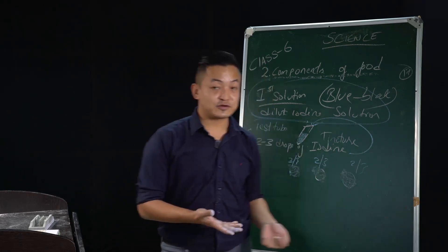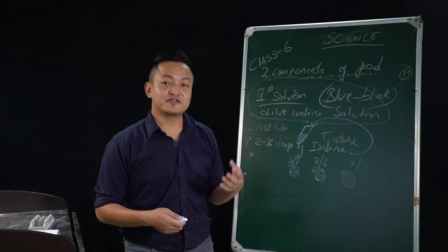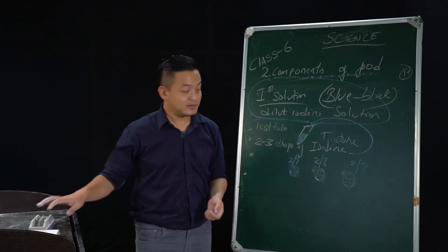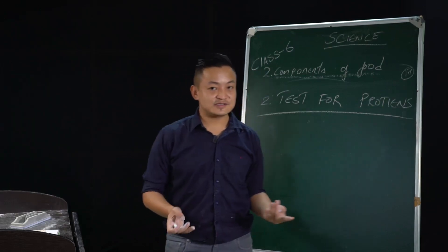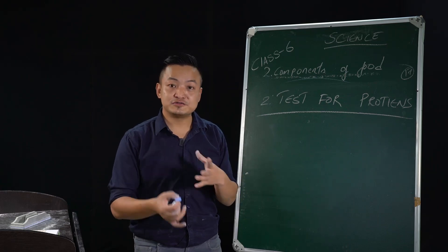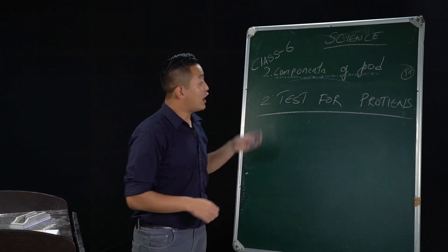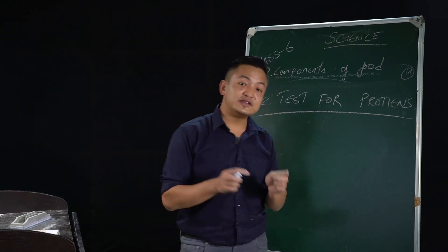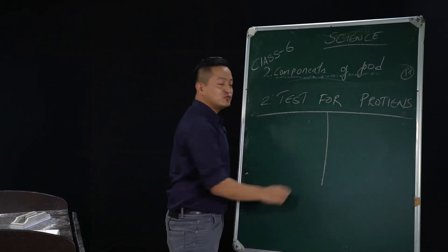The next test is important — the test for proteins. Protein is very important: it helps repair tissues, maintain muscles, body repair, and growth. To detect the presence of proteins in food, we need to make two solutions. For carbohydrates we just made one solution, but here we need two.